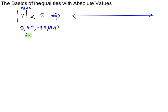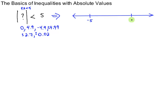It could be 2.7 or negative 2.7. It could be 0.02 or negative 0.02. So the idea is: if the absolute value is a number less than 5, then question mark has to be a number between negative 5 and positive 5.